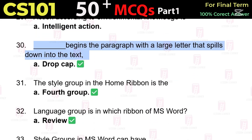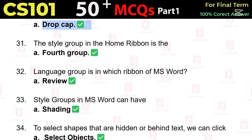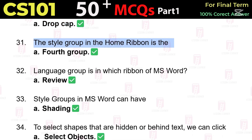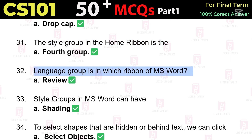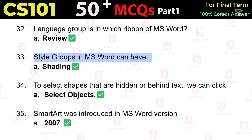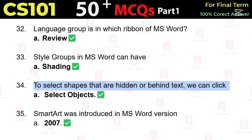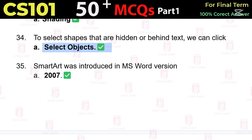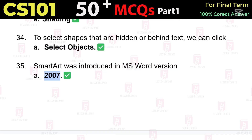Actions according to environmental knowledge are called intelligent actions. Drop cap begins the paragraph with a large letter that spills down into the text. The style group in the Home ribbon is the fourth group. Language group is in the Review ribbon of MS Word. A style group in MS Word can have shading. To select shapes that are hidden or behind text, we can click on 'Select Objects'.